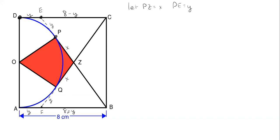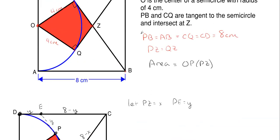Let's fill in one last length we're going to need. What is CZ and what is BZ? Since CQ is 8 centimeters and PB is 8 centimeters, CZ would be 8 minus x and BZ would also be 8 minus x. That 8 came from our earlier determination using the tangent lines.